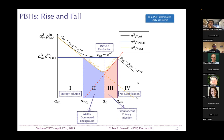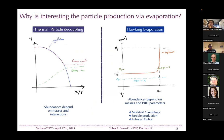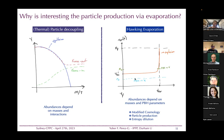Hawking particle production is interesting because it depends on totally different physics than thermal particle decoupling. Thermal freeze-out depends on particle masses and interaction strengths. Hawking evaporation, by contrast, doesn't care about interaction details — it cares about the existence and mass of particles. If the particle mass is smaller than the black hole temperature, it is emitted throughout the black hole's history.